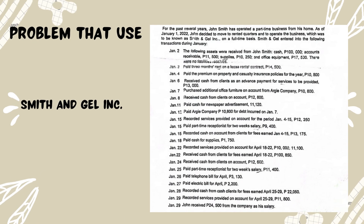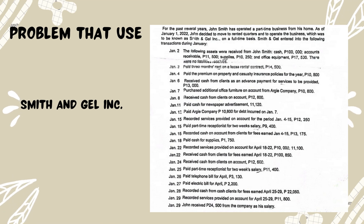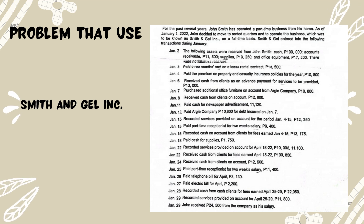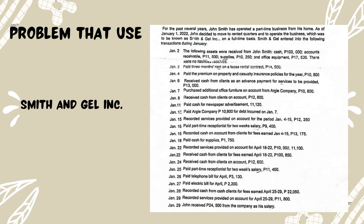Transaction dated January 2: the following assets were received from Jen Smith — Cash $100,000, Accounts Receivable $11,500, Supplies $10,250, and Office Equipment $17,500. There were no liabilities received.